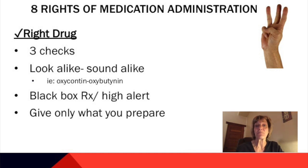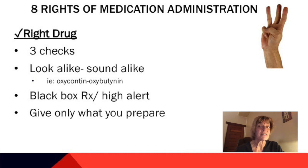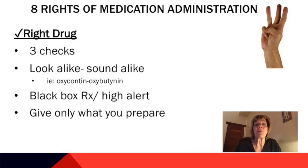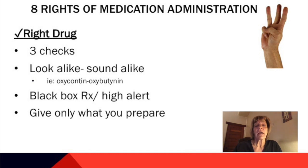Be aware of your look-alike, sound-alike medications. All your facilities will have those listed and posted, so be familiar with them. A good example is OxyContin and Oxybutynin — OxyContin is a Schedule II narcotic and a very powerful pain medication, while Oxybutynin is for urinary incontinence. You also have black box medications and high-alert medications. Know your facility policies with high-alert medications and that they have an increased potential to do harm. Many facilities will require two nurses' signatures before those medications are administered. Examples include heparin and insulin.